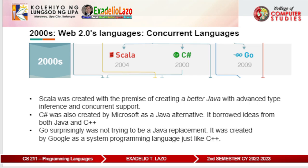The 2000s: Web 2.0 languages and concurrent languages. In the 2000s came the age of web applications. Web applications like Gmail, YouTube, and Facebook were getting more and more powerful. The programming languages created in this decade had a strong emphasis on handling concurrent programming. Concurrency had been around for ages, but the wave of Web 2.0 applications made this trait more important than ever.